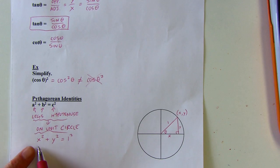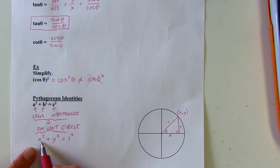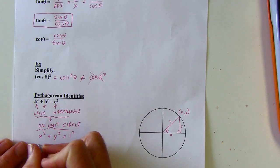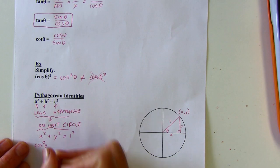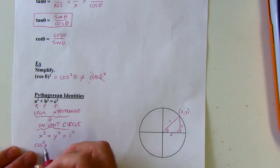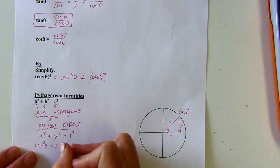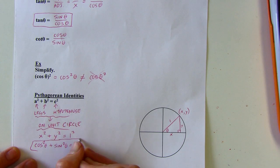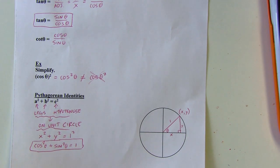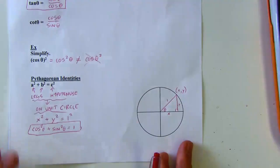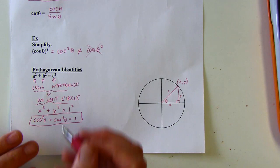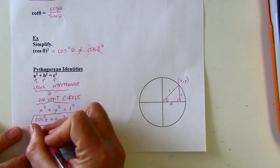Now let's rewrite this in terms of sine and cosine. Cosine is equivalent to x and sine is equivalent to y — the way I remember that is x comes before y alphabetically, and cosine comes before sine alphabetically. So we get cosine squared theta plus sine squared theta equals 1. This is our basic original Pythagorean identity, and we're going to use that a lot. There are also Pythagorean identities involving tangent and secant, and cotangent and cosecant.